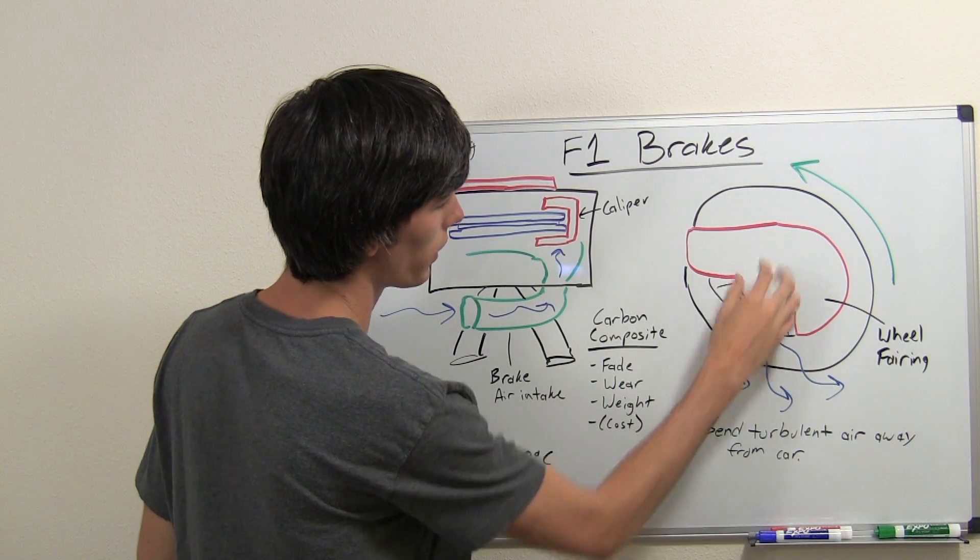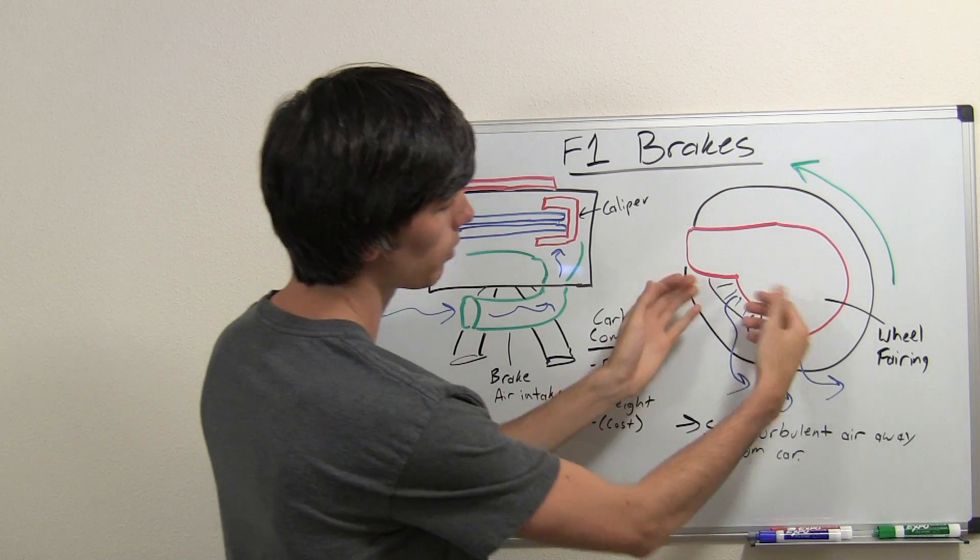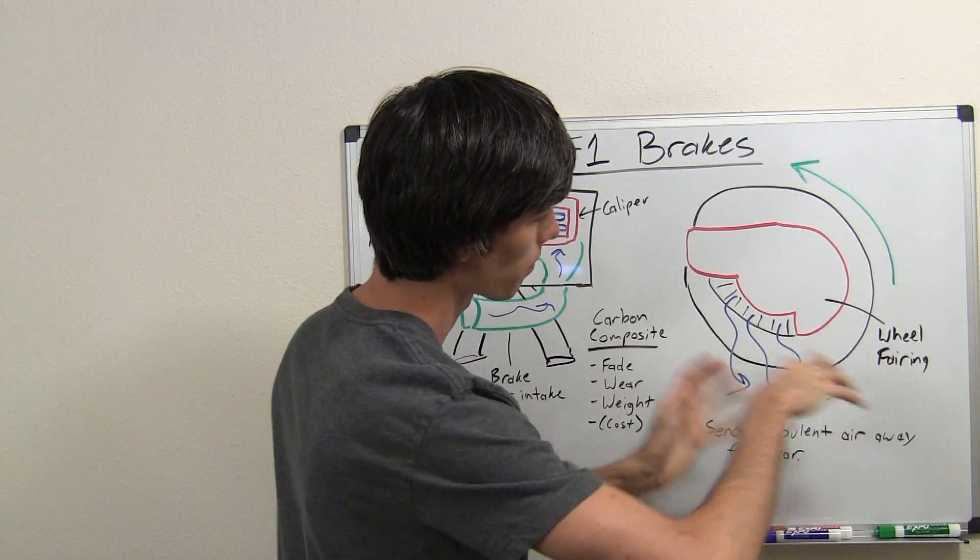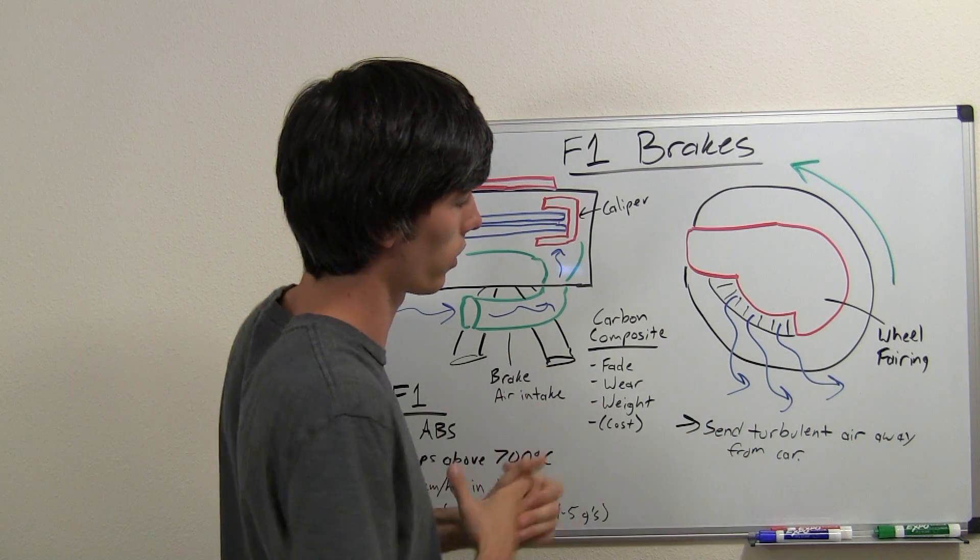So with these wheel fairings, you just have a small opening which the air is allowed to escape and it's pushed out and away from the vehicle, minimizing its impact on the aerodynamics.